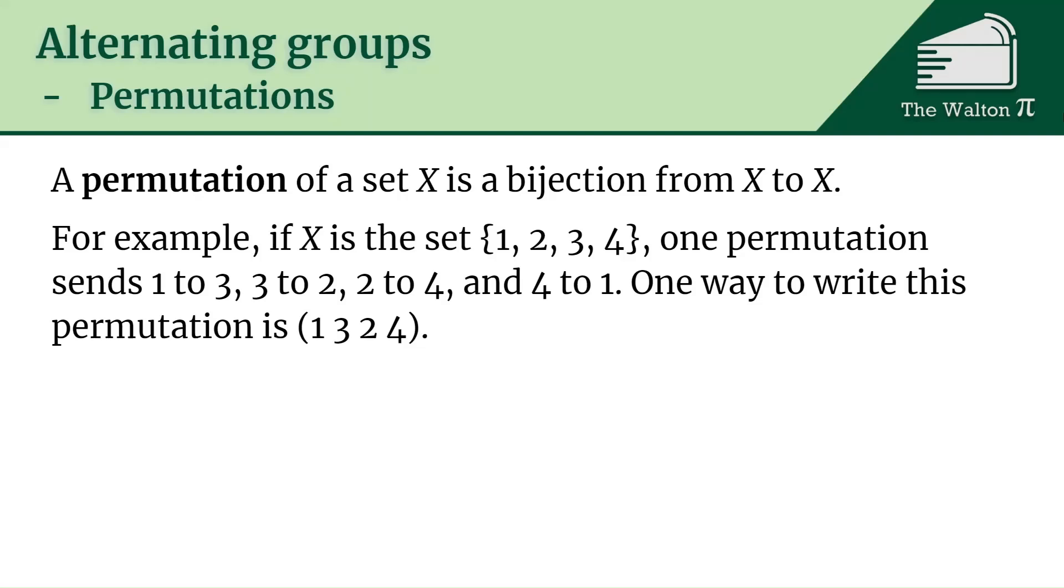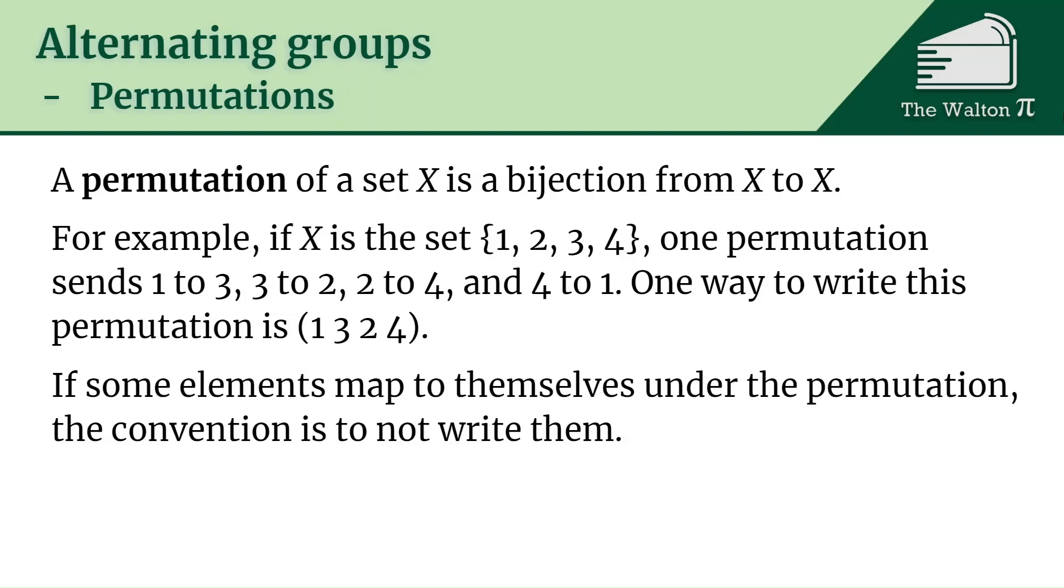One way to write this permutation is (1 3 2 4). This means that 1 goes to 3 because 1 comes first then comes 3, and then 3 goes to 2 so 2 comes after the 3. 2 maps to 4, and 4 goes to 1, so that goes back to the first thing, so we close the parentheses.